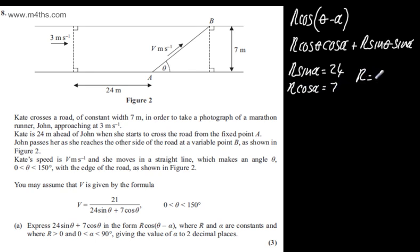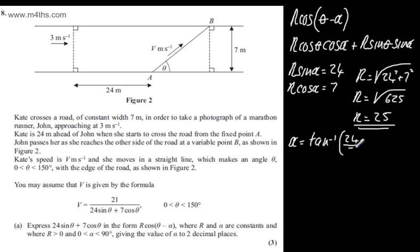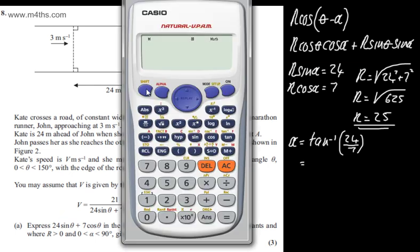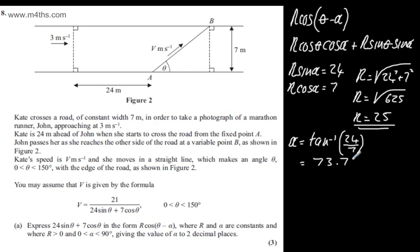R is the square root of 24 squared plus 7 squared. You might realize that this is a Pythagorean triple. If not, we can just work that out. Square root of 625 and that's going to give us R is going to be 25. We now need alpha. Alpha is given to be the inverse tan of 24 divided by 7. So if we work this out on a calculator and give it to 2 decimal places, we do the inverse tan of 24 divided by 7 and that's going to give me 73.74.